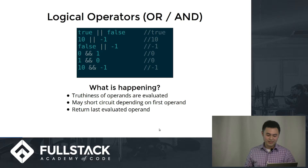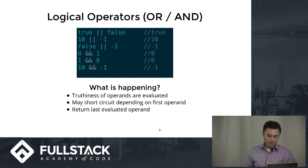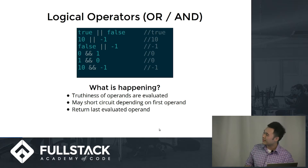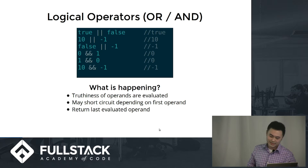The common operators that most people use are logical operators. They're a little bit different from bitwise operators. So a logical operator would evaluate the truthiness of the operand, short circuit depending on what the first operand is, and then return the last evaluated operand.